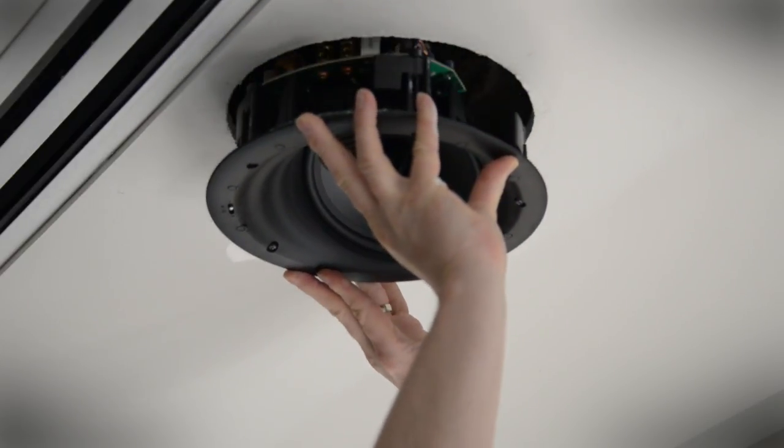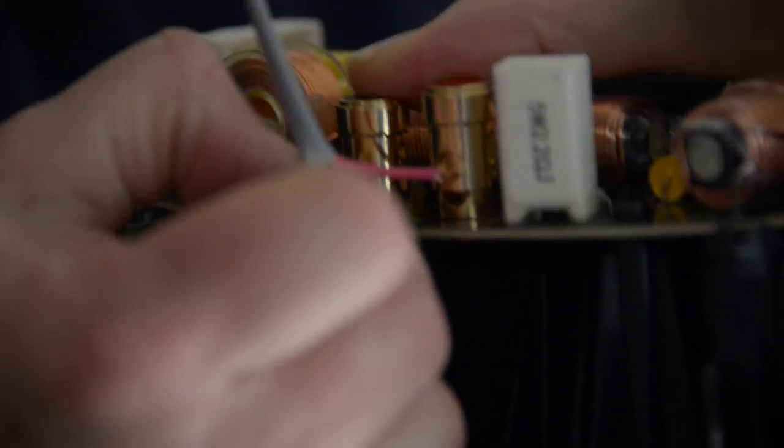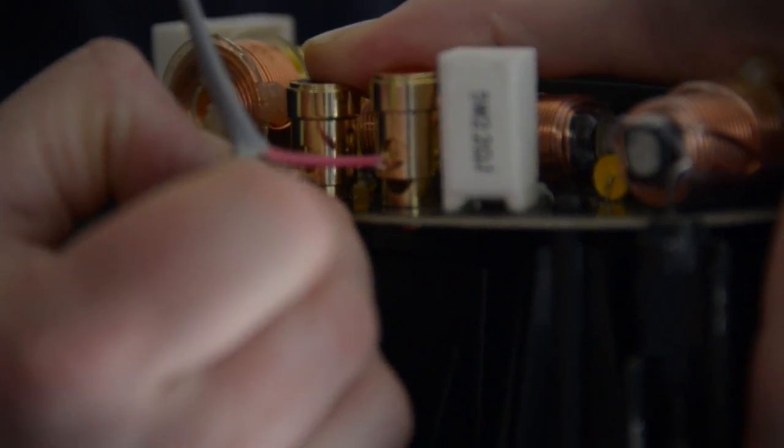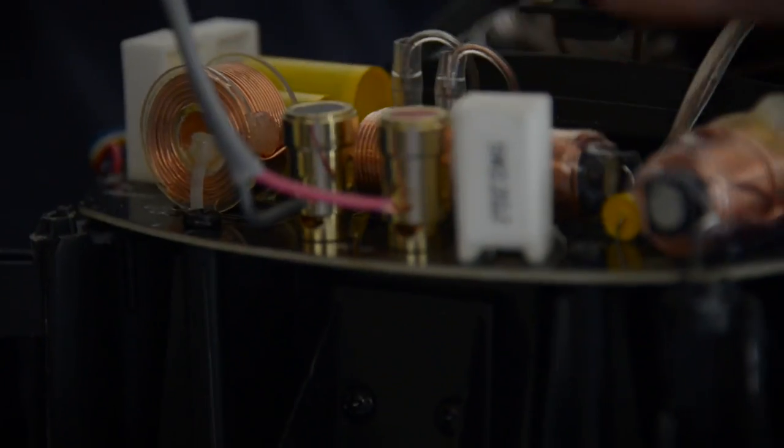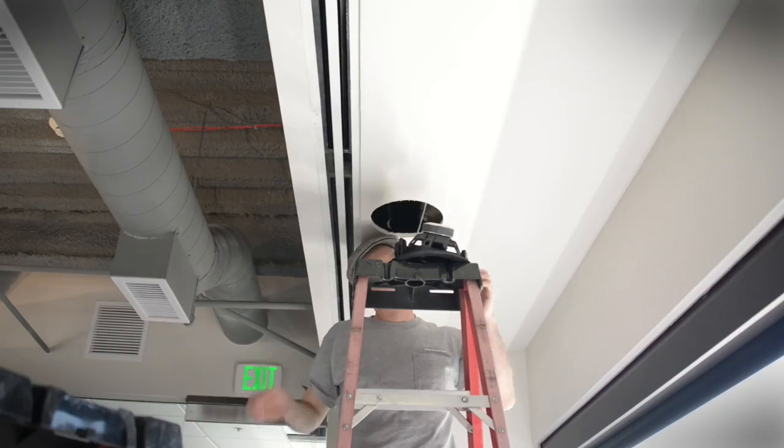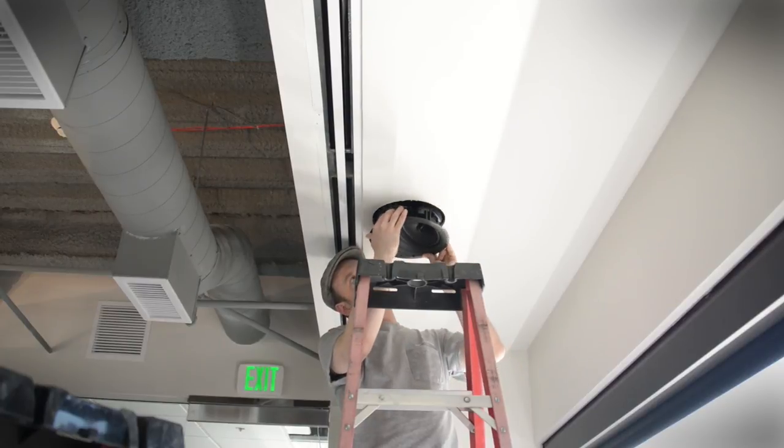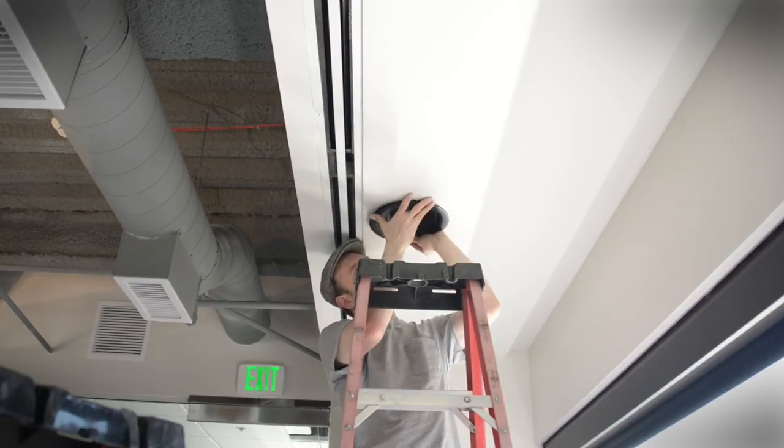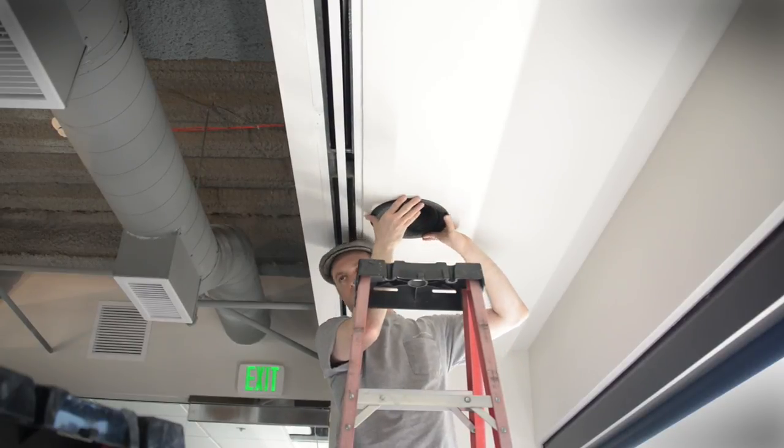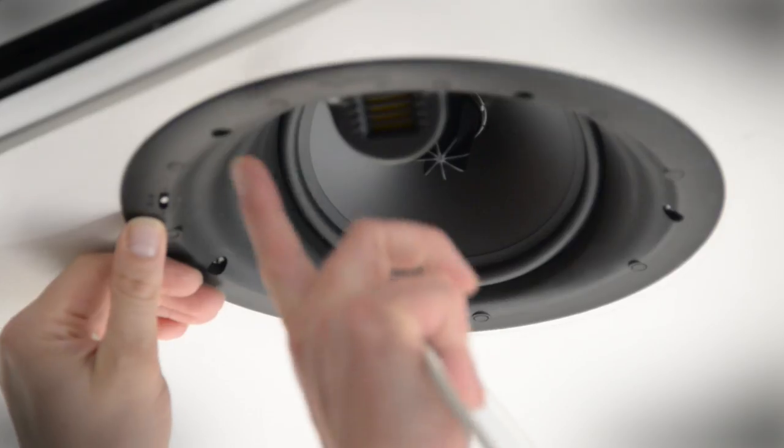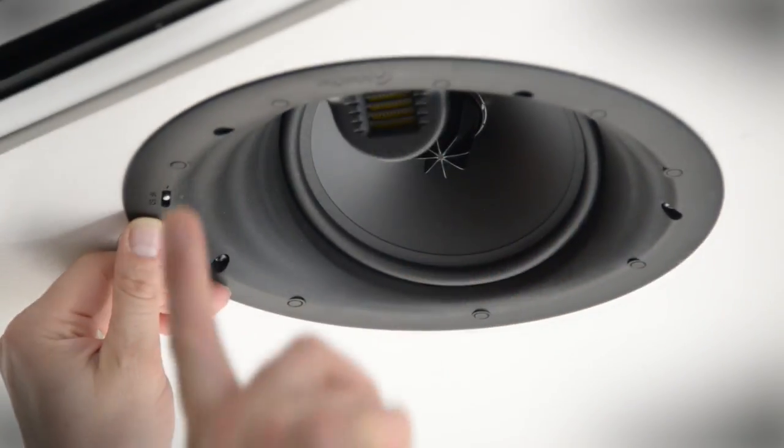Once the speaker fits well, let's attach the speaker wire. Make sure you get your polarity right. You want the positive lead going to the red terminal and the negative lead going to the black terminal. Now we're ready to put the speaker in, but if you have a speaker like ours that's somewhat directional, let's think about how you're going to aim the speaker. Think about toeing the speaker in so that it's aimed towards the center of the room like we have here.